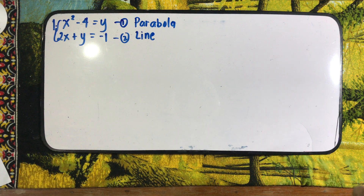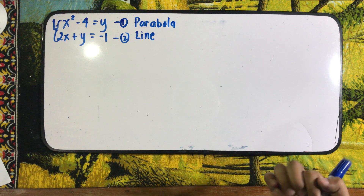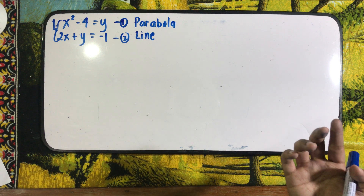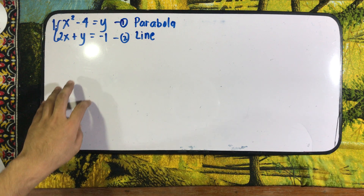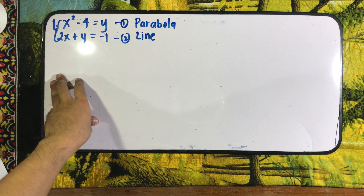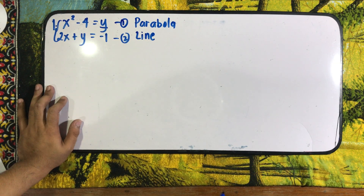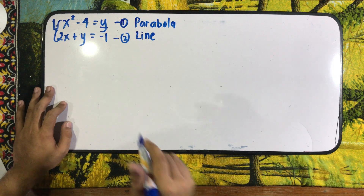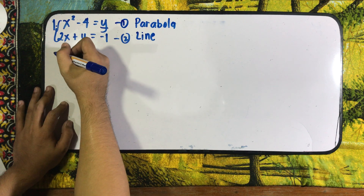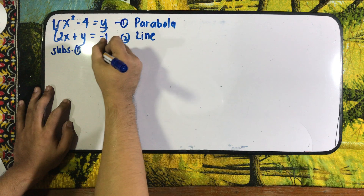In order to solve for the systems of equations, we have three options: substitution, elimination, and by graphing. Since y is equal to x squared minus 4 — meaning y is already expressed in terms of x — we will use substitution. We substitute equation 1 into equation 2, replacing all values of y present in equation 2.